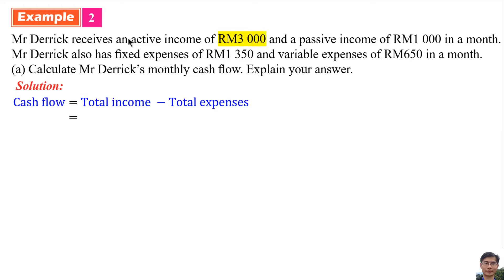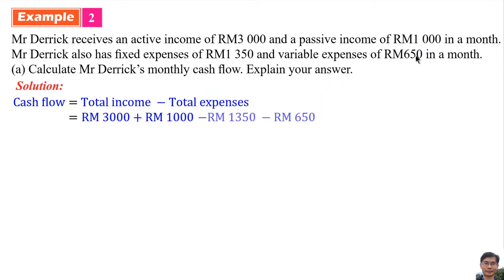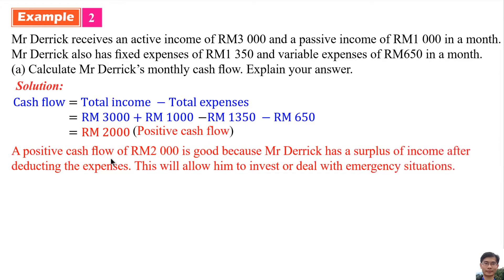The total income is active income plus passive income: 3,000 ringgit plus 1,000 ringgit equals 4,000 ringgit. The total expenses are 1,350 ringgit plus 650 ringgit equals 2,000 ringgit. Therefore, the cash flow is 2,000 ringgit, which is a positive cash flow. A positive cash flow of 2,000 ringgit is good because Mr. Derrick has a surplus of income after deducting expenses, allowing him to invest or deal with emergency situations.